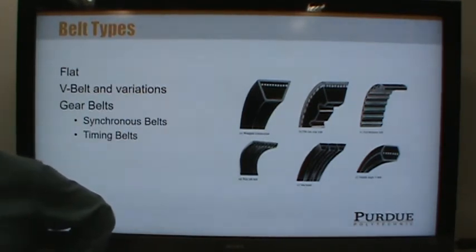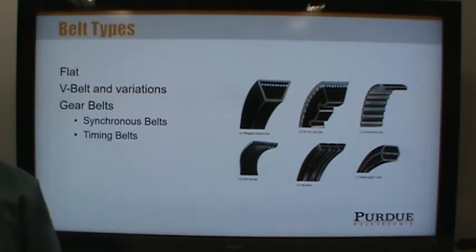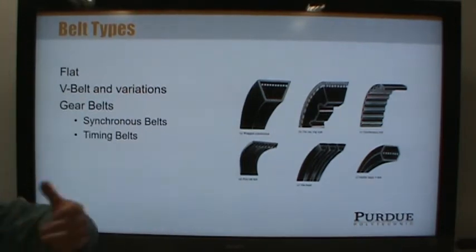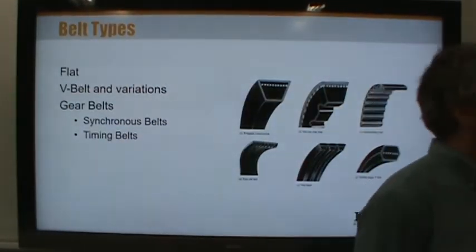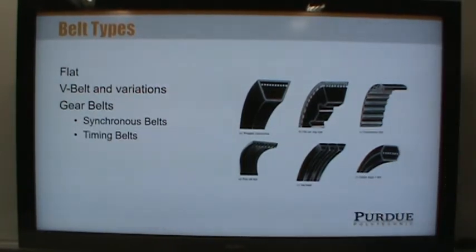Flat belts were common on older equipment. They have problems though — a flat belt running a long distance can catch things, including people, which is extremely dangerous. They're also prone to whipping and vibration over long lengths. Older equipment typically ran slower, which helped reduce whipping, but to transmit more power you need more speed, and at slow speeds you can get slippage. Older machinery also simply didn't have as much power output as modern equipment — my 1960s backhoe only has about 30 to 35 horsepower, probably down to 20 now.